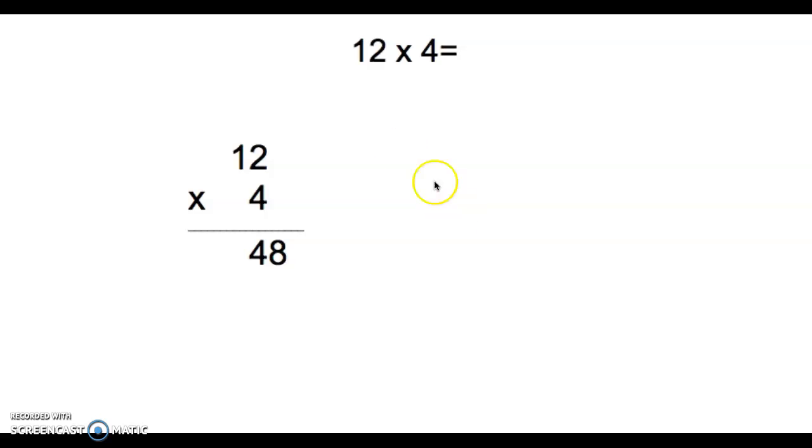So this is from Tuesday. We had our two-digit by one-digit multiplication, and we multiplied 4 times the number in the ones place. Four times 2 is 8, and then we multiply the 4 with the digit in the tens place. We did 4 times 1 is 4, but it's worth 40, so we get 48.